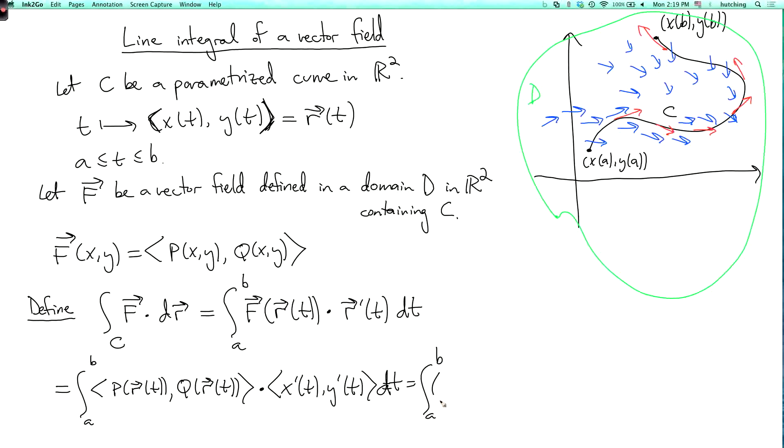So it's the integral from a to b of P(r(t)) x'(t) plus Q(r(t)) y'(t) dt. We can split this into the two integrals coming from these two summands. You'll recognize the first one is just the integral of P dx and the second one is the integral of Q dy. So I could write that as the integral from a to b of P dx plus Q dy.